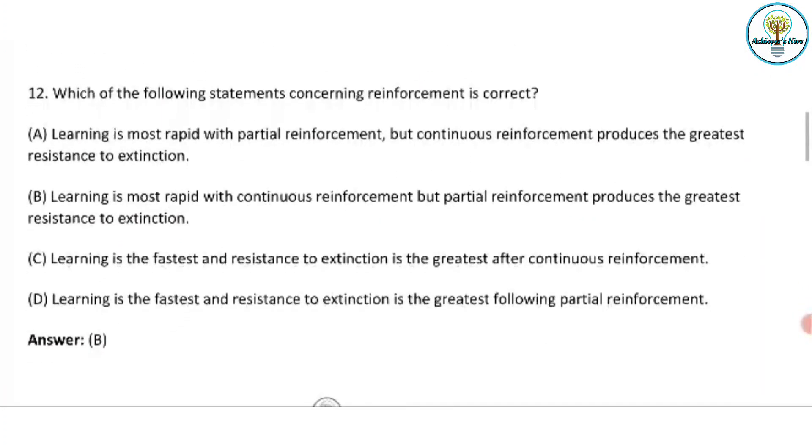Coming to question number twelve. Which of the following statement concerning reinforcement is correct? We are given four options. Read the options properly and then you will get to know that option B is the correct answer here. Take your time and read the question. Read the options and then see that option B is the correct. Learning is most rapid with continuous reinforcement, but partial reinforcement produces the greatest resistance to extinction.